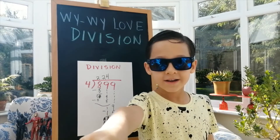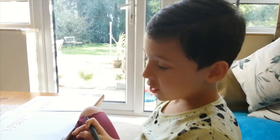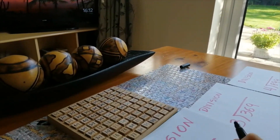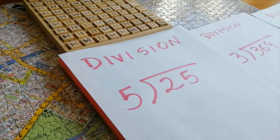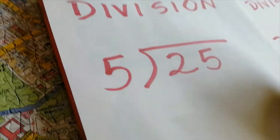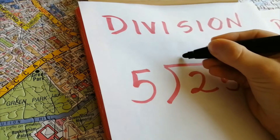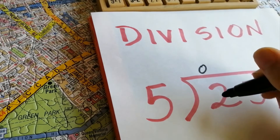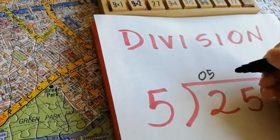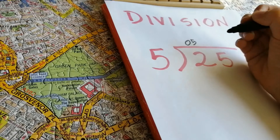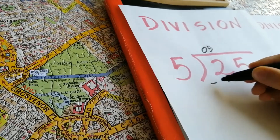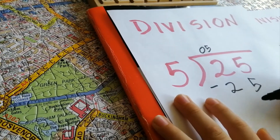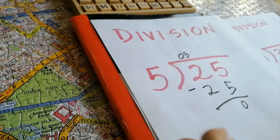Hi guys, today we are going to study that division and I'm going to write it. Mommy's going to say it in Spanish. ¿Cuántas veces está el cinco en el dos? Cero. ¿Cuántas veces está el cinco en el veinticinco? Cinco. Cinco por cinco, veinticinco, menos veinticinco, cero. La respuesta es cinco.